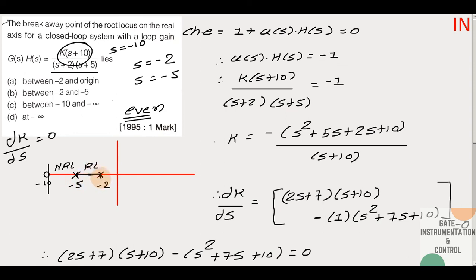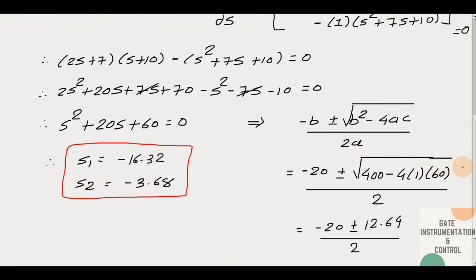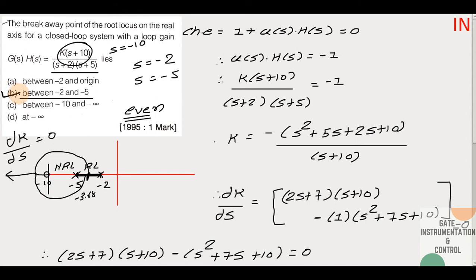The break-away point is equal to approximately minus 3.68. If we look at minus 3.68, it lies between minus 2 and minus 5 on the root locus. So that is the break-away point, lying between minus 2 and minus 5. Therefore option B is the correct answer.